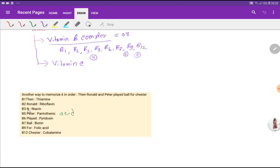Then 'Peter' will take B5 pantothenic acid, 'played' will take B6 pyridoxin.